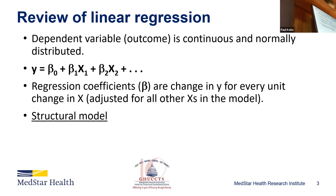To review linear regression, we have a continuous and normally distributed outcome, though it doesn't have to be exactly normally distributed. We have the regression equation with covariates times regression coefficients — the betas — which represent the change in the outcome for every unit change in the covariates. In a multiple linear equation, the betas are adjusted for all other variables in the model. In the context of structural equation modeling, we're going to identify this as the structural model.